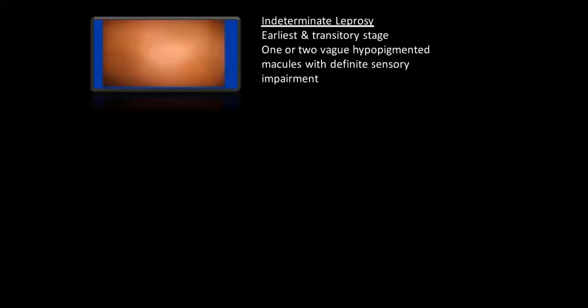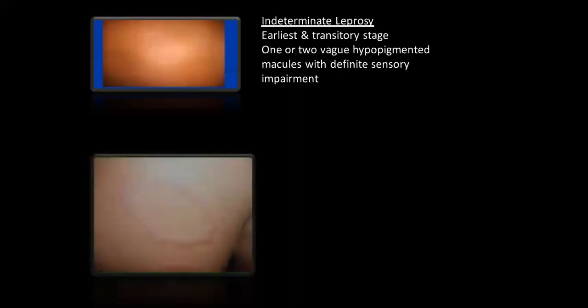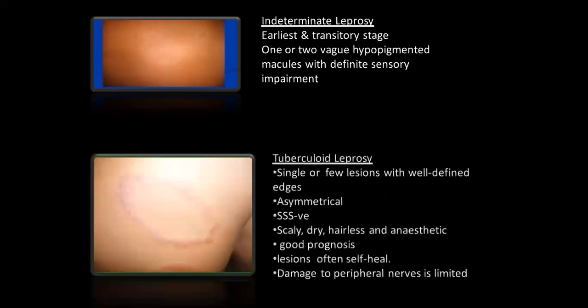Nerve pain is misdiagnosed as joint pain and may present as a painless burn or ulcer because the patient has neuropathy. In indeterminate leprosy, you cannot easily say this is leprosy. Tuberculoid variety: single or few lesions, asymmetric; slit skin smear is negative. Scaly, dry, hairless, anaesthetic area — but this has good prognosis and often self-heals, though damage to peripheral nerves is limited.